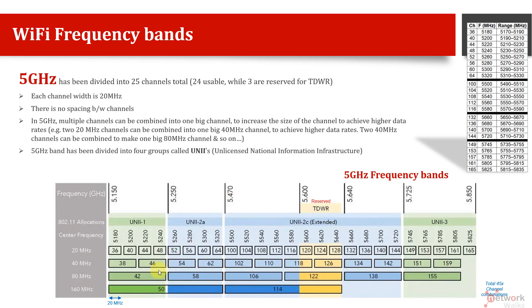Some router models give you a provision to choose the channel width. If you choose 20 MHz, it will show you 25 total channels. If you choose 40 MHz, it gives you fewer channels. If you choose 80 MHz, it gives you only 6. If you choose 160 MHz, it gives you only 2 options.